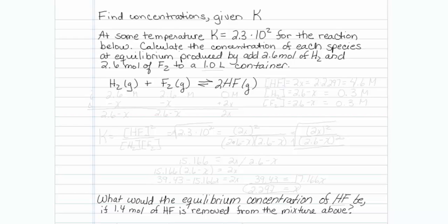This is how to find equilibrium concentrations given an equilibrium constant. At some temperature, K equals 2.3 times 10 to the second power for the reaction shown. Calculate the concentration of each species at equilibrium produced by adding 2.6 moles of H₂ and 2.6 moles of F₂ to a 1-liter container.